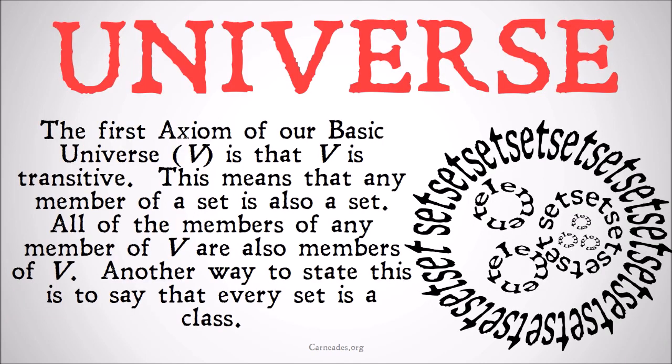The first axiom of the basic universe V is very simple: V is transitive. We learned about transitivity in an earlier video — check that out if you're curious. This means that any member of a set is also a set, because any member of V is also a member of V. So any member of a set is a set.